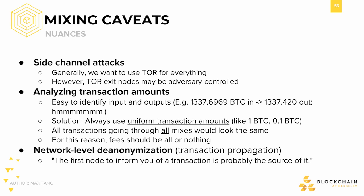Second, we want to make sure that it's not obvious, given the transaction amounts, which input corresponds to which output — else our scheme would be trivially breakable. The solution is to use uniform transaction amounts across the board to ensure all transactions resemble each other and all outputs are indistinguishable from each other. Finally, we want to ensure that transaction propagation does not unintentionally reveal our identities. This is known as network-level de-anonymization. The first node to inform the network of a transaction is likely the source of it in almost all instances, so we need a way to get around this problem as well.